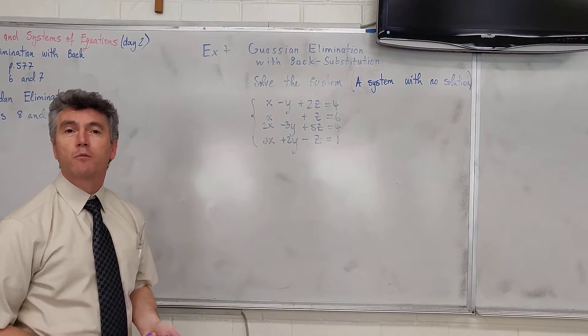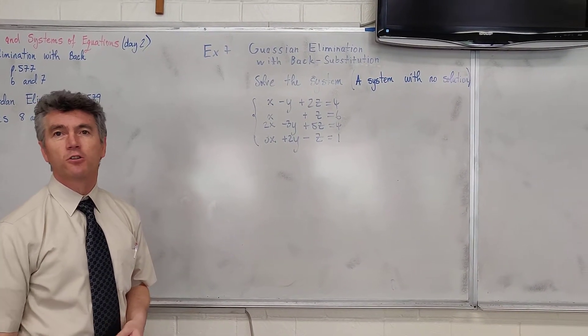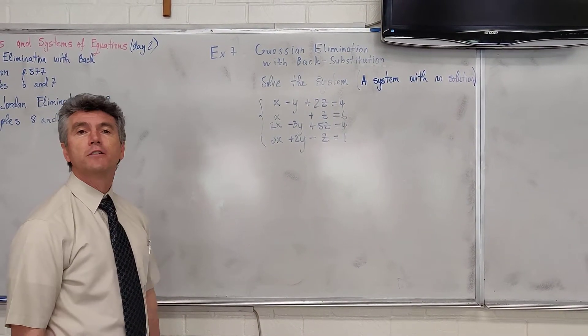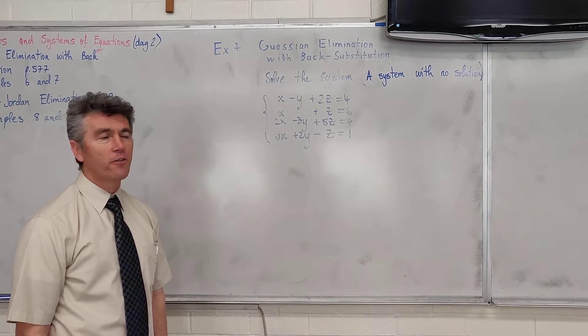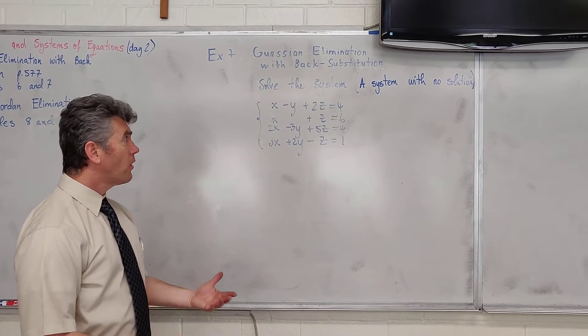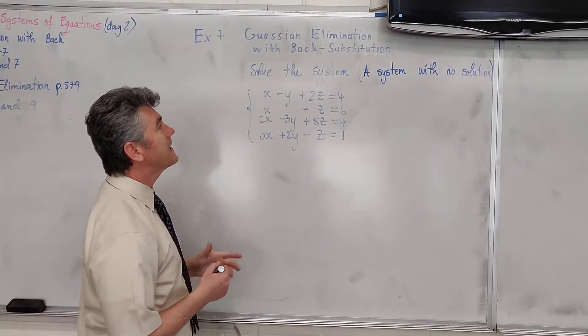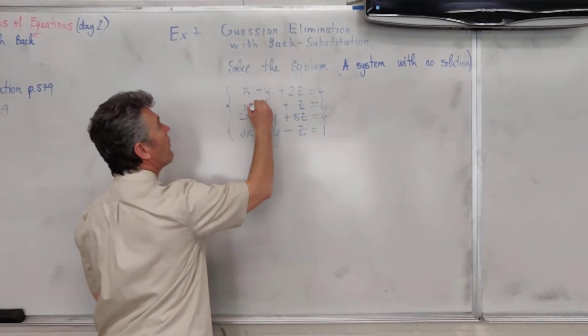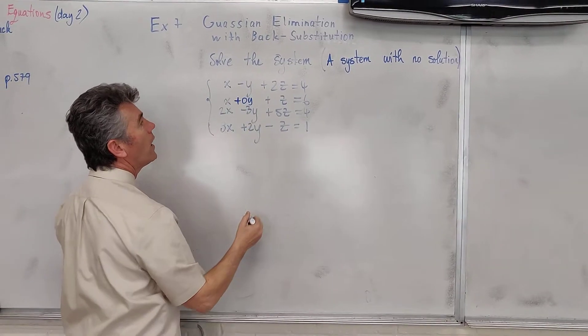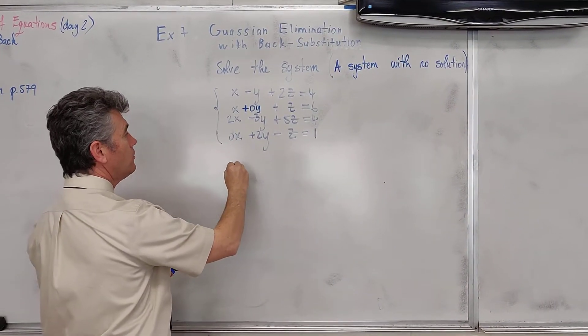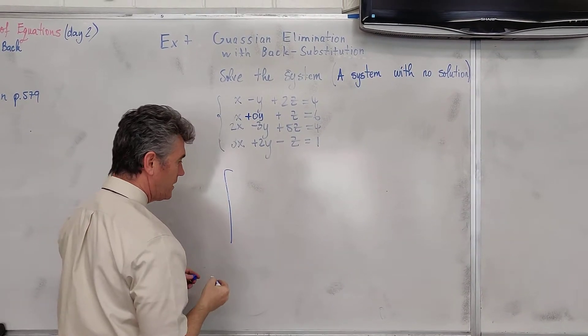Example 7 is next. In example 7, we're going to just use Gaussian elimination. In other words, we want to put our matrix in row echelon form. So we start. The first thing that you notice is in the second row we are missing a term. And so we write x plus 0y plus z is equal to 6. It is now time to write our augmented matrix.